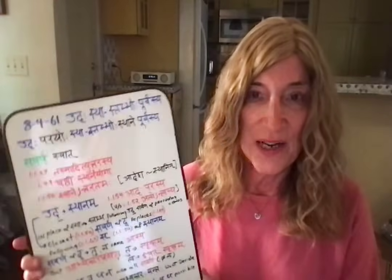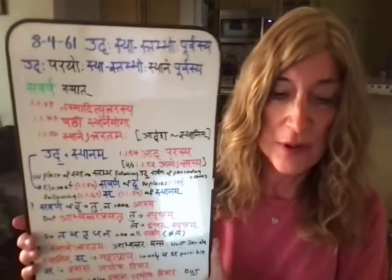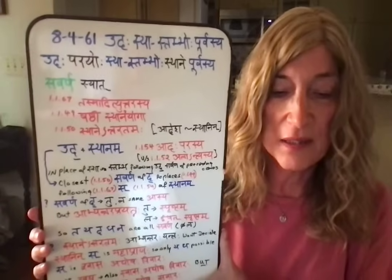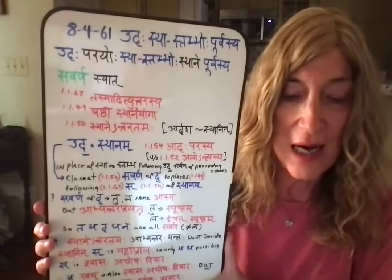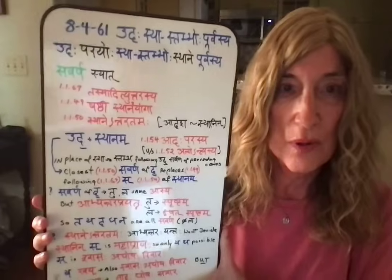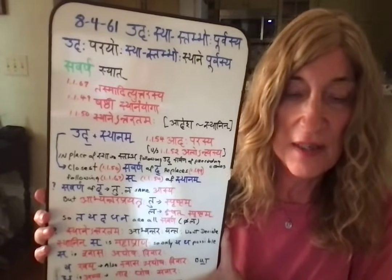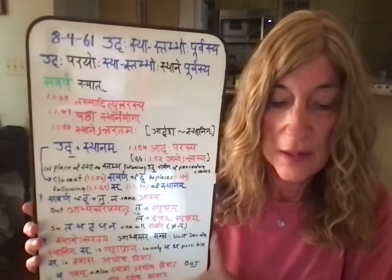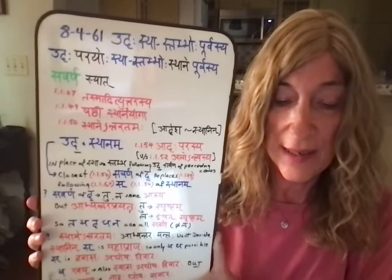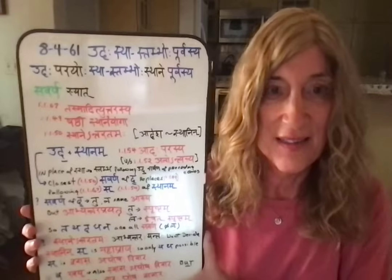At a certain point we have access to all of the sutras simultaneously in our mind, and we reflexively understand when they come into play. The sutra is from quite a way down the line, but we will get to it in our order of things. It's 8.4.61: udastāstamboh pūrvasya. The full form is: udāha-parayoḥ stastambhoḥ sthāne pūrvasya savarṇasyāt.